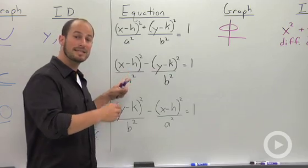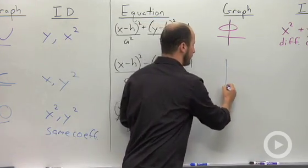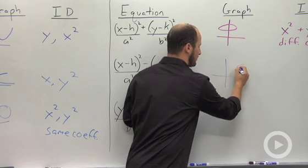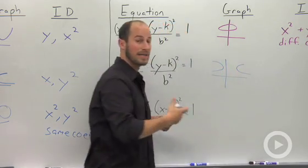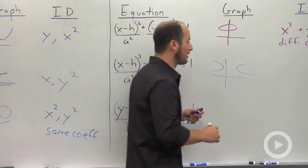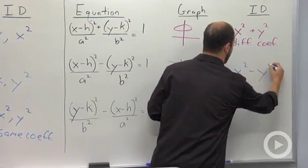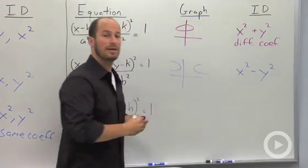The x term is telling you in this case that it's going to be going side to side. So in this one, we have something that looks like this. Key identifying features in this case are x squared minus y squared.